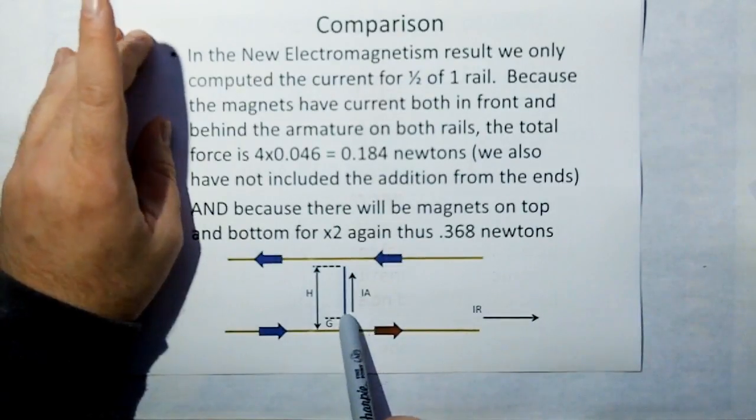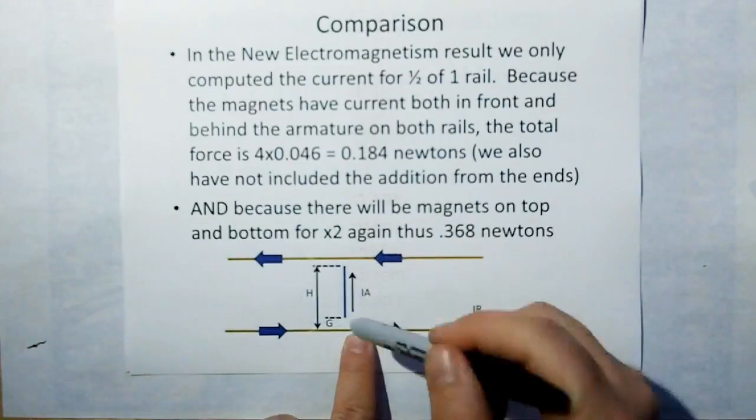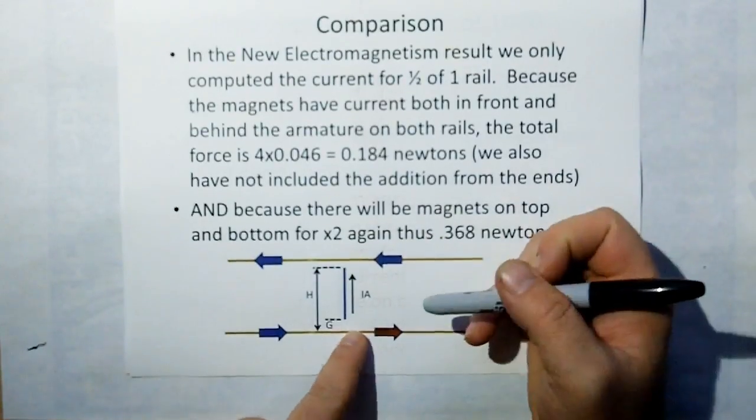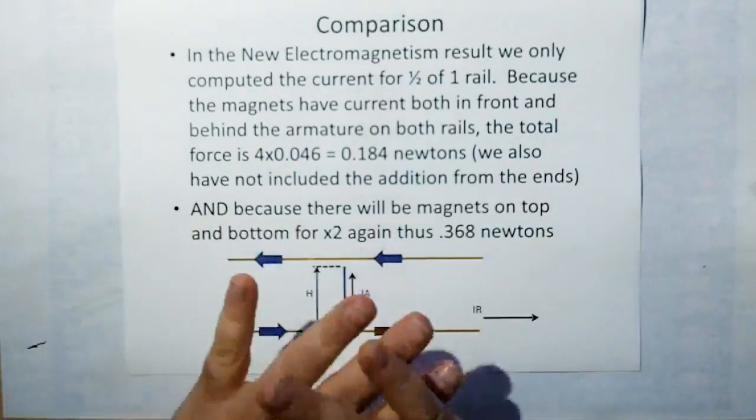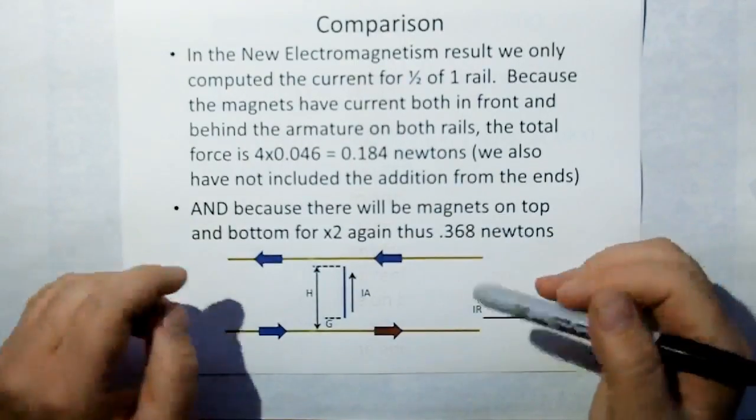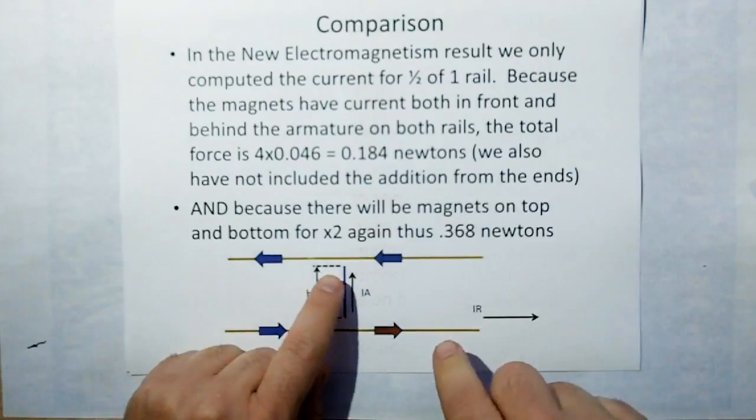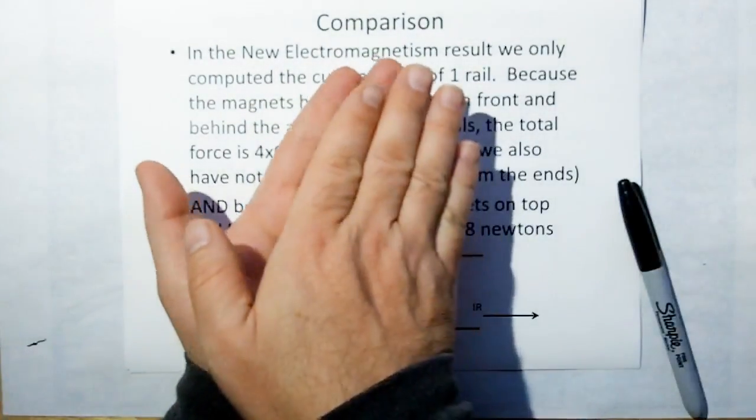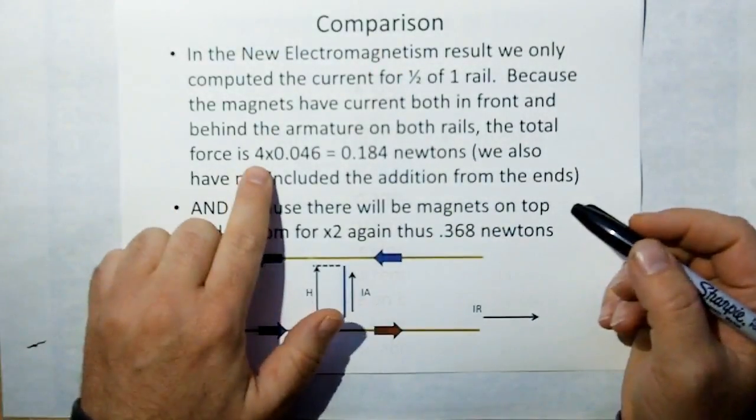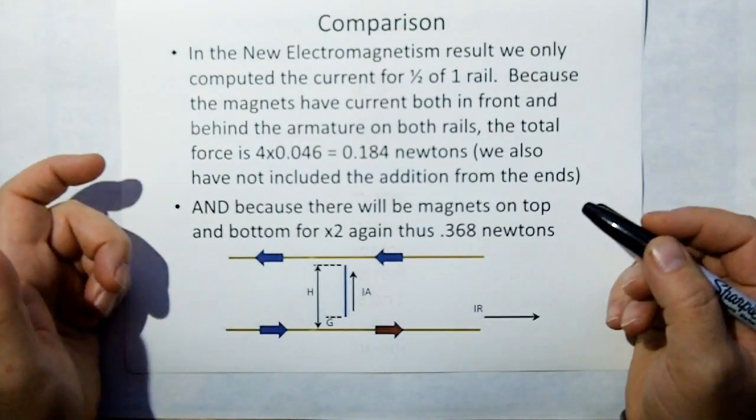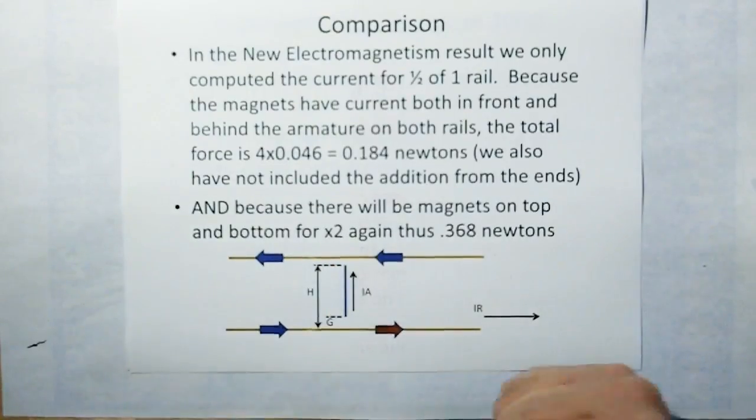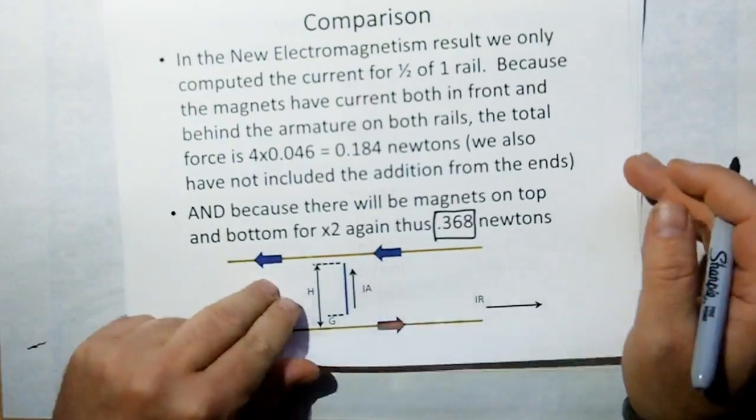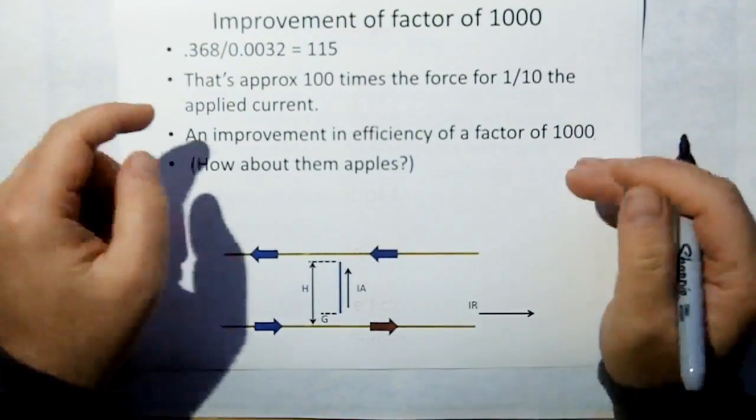But in the new electromagnetism result we only computed the current for one half of one rail. We computed for this rail acting on the armature. We still have to compute for the current coming before, because magnets have current all the way around. In the classic rail design the current is only before the rail. In the magnets the currents are there all the time, in front and back on both rails. When we did the calculation we only computed for one rail against the armature. We really have four sets of currents acting on the armature for a factor of two, and because we're going to have a magnet on the top and bottom there's another factor of two. So four times gives 184, and the two magnets gives two again, so our total effective newtons for just a 10 amp juice through the armature is going to be 368 millinewtons.